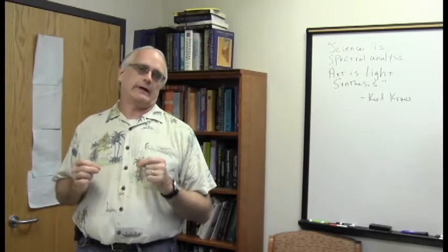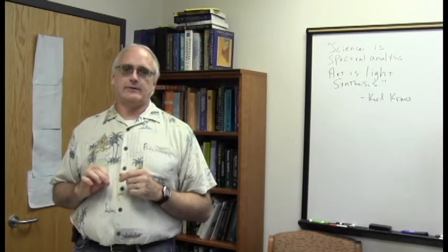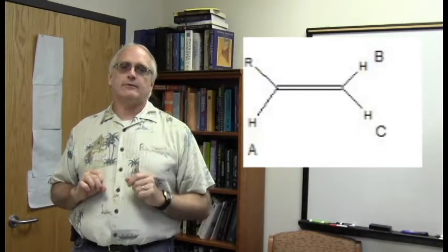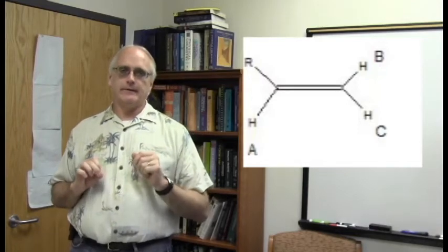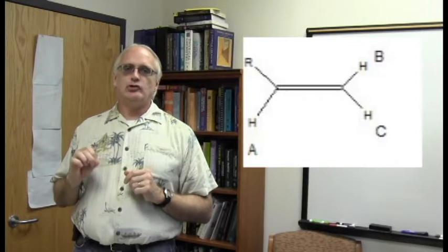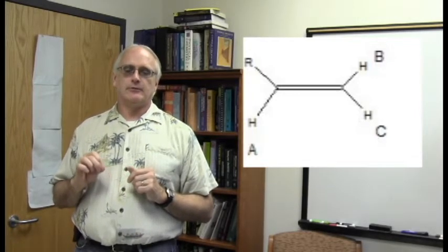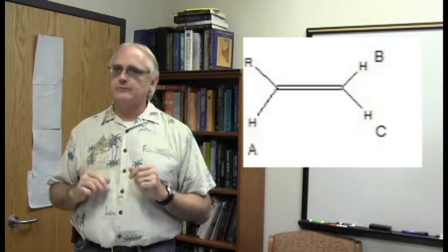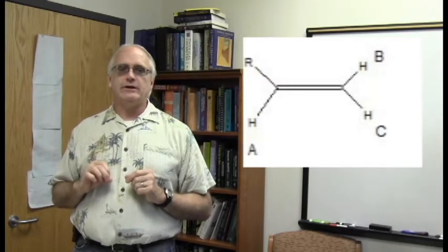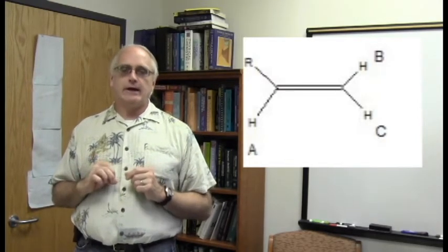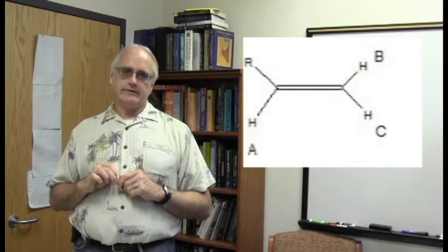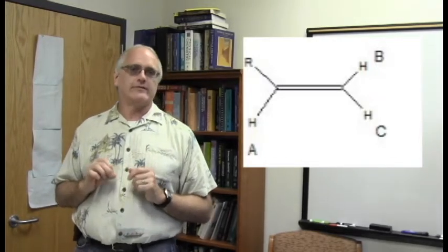A common example we run across are alkenes. If you look at this outline of the structure of a molecule here, looking at proton A for a moment here on the double bond, it actually is going to be coupled to two other protons, protons B and C. But remember, in a double bond, there is no free rotation here. These two protons B and C are locked into position. Proton B is trans to proton A, and that will actually lead to one of the largest proton-proton coupling constants we measure. Somewhere between 16 and 18 hertz are often seen here.